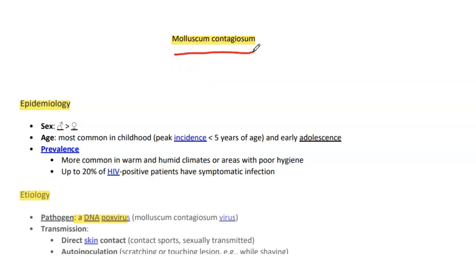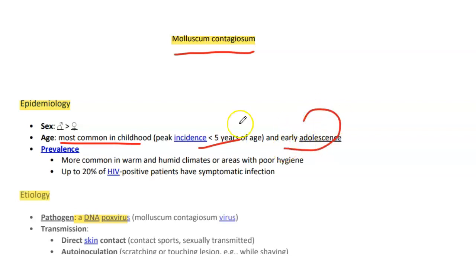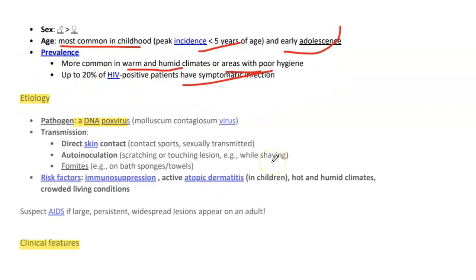Today the topic of discussion is viral infection due to molluscum contagiosum virus. Epidemiology: it is most common in childhood, usually less than 5 years of age and early adolescence. It is most common in warm and humid climates or areas with poor hygiene, and up to 20% of HIV positive patients have symptomatic infections.